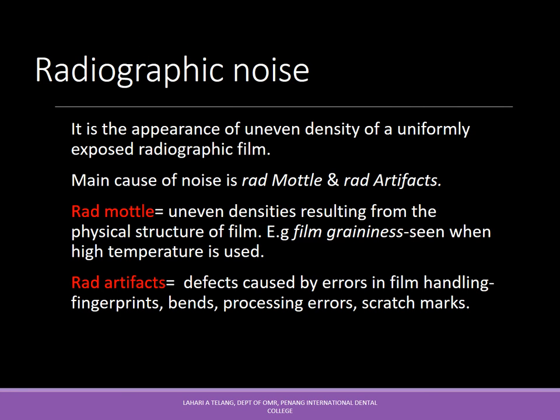Radiographic noise is the appearance of uneven densities on a uniformly exposed radiographic film. The main cause of noise is radiographic mottle or artifacts. Mottle refers to uneven densities resulting from the physical structure of the film, for example film graininess seen when high temperature is used. Artifacts are defects caused by errors in film handling like fingerprints, bends, processing errors, or scratch marks.